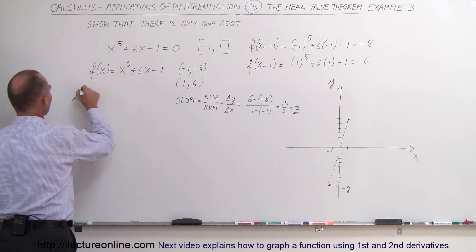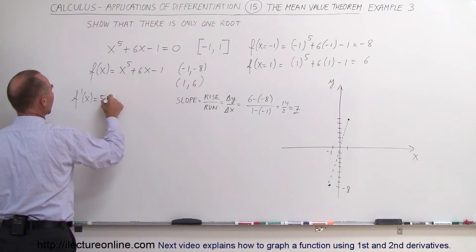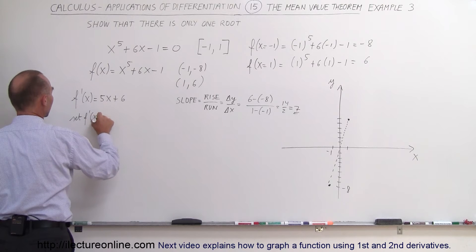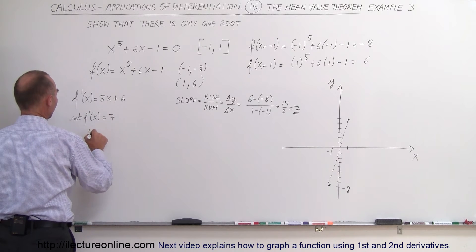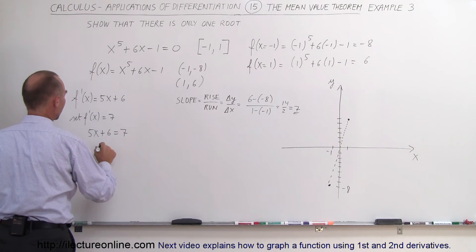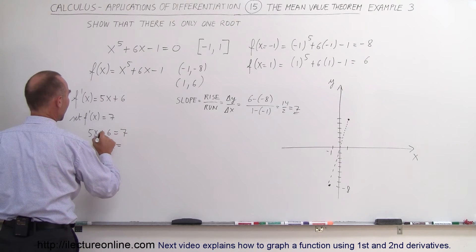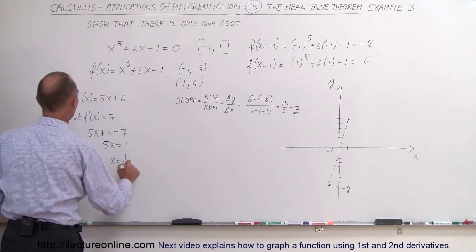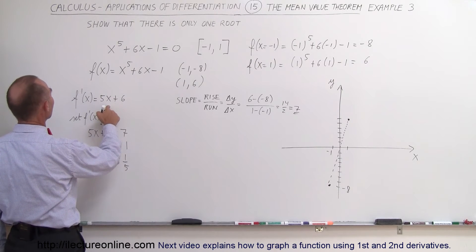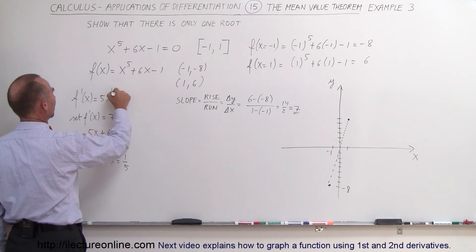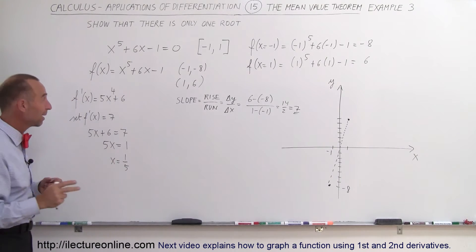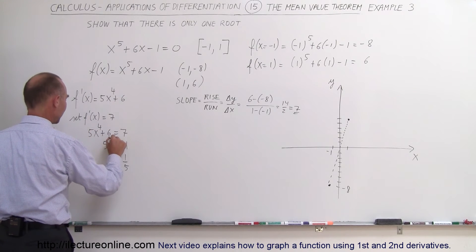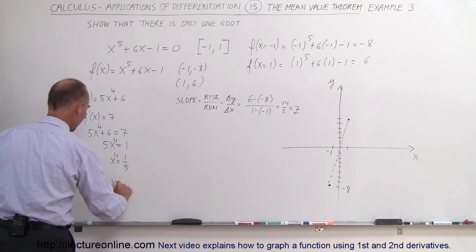Now we apply the Mean Value Theorem — we look for points along the curve with the same slope. f'(x) = 5x⁴ + 6. Setting f'(x) = 7: 5x⁴ + 6 = 7. Note: I initially forgot the x⁴ exponent in the derivative, so the correct derivative is 5x⁴ + 6.